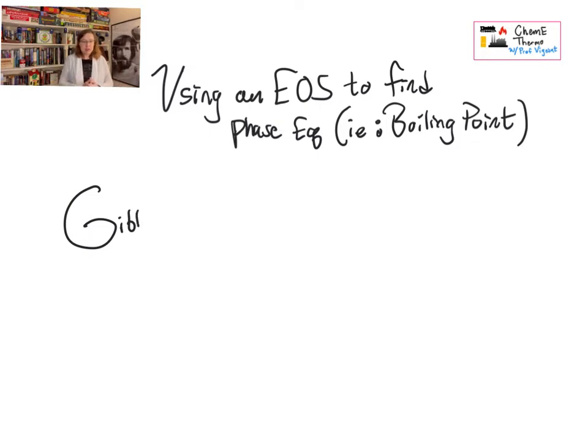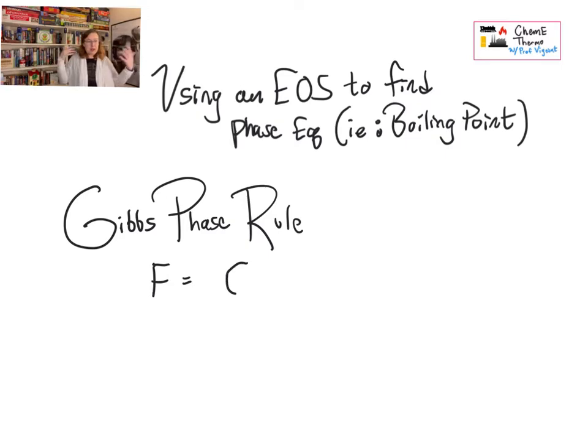So we haven't been able to do this yet. And to talk about that, we have to talk about two things before we can do the problem. One is the Gibbs phase rule, which we have been using all along, but I haven't articulated. So maybe you remember it from another class. It's F equals C minus P plus 2.